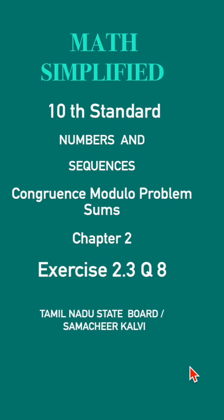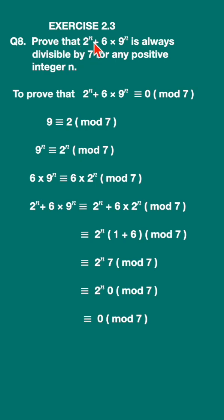Standard exercise 2.3 question 8. Prove that 2 raised to n plus 6 into 9 raised to n is always divisible by 7 for any positive integer n.